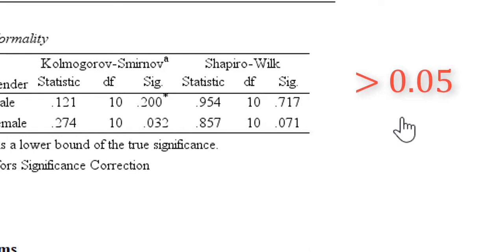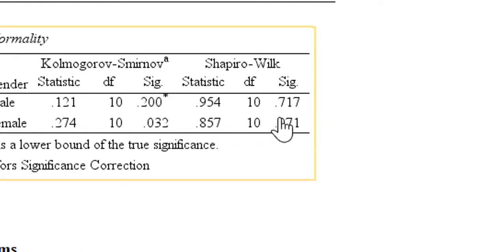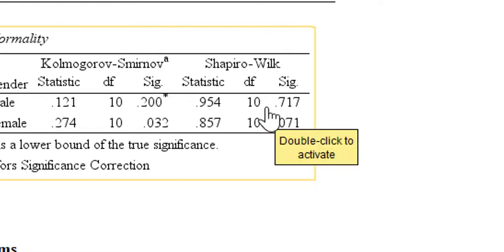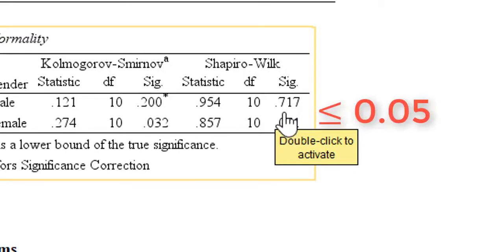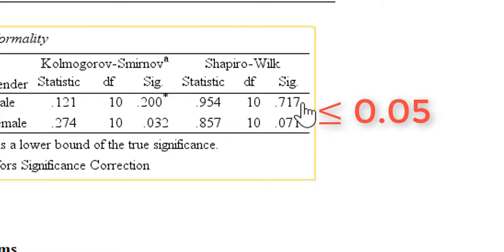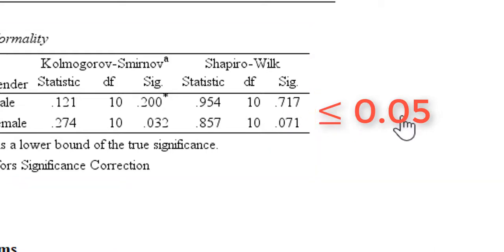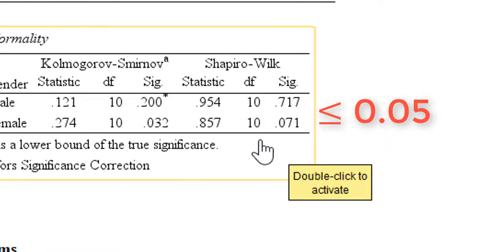As you can see, the p-value for the male group is 0.7, and for the female group it is 0.07. Both of these values are greater than 0.05, which means we fail to reject the null hypothesis. This indicates that our data is normally distributed.